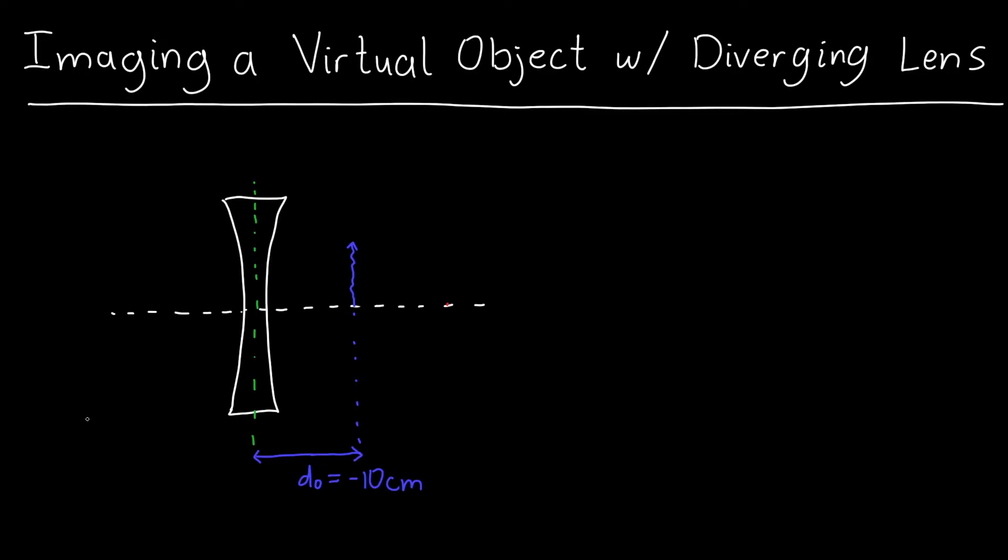If the object is virtual, as it is in this case, if they're to the left, then they're positive. And let's say that the focal length of this lens is negative 20 centimeters. So it's a diverging lens that has a negative focal length.